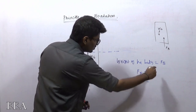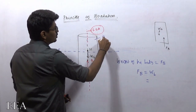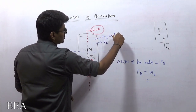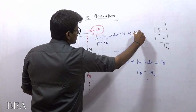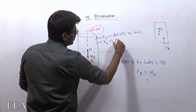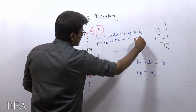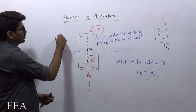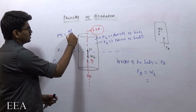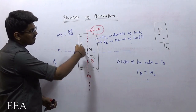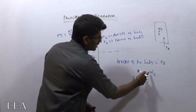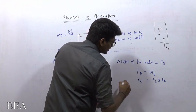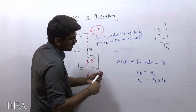And what is W_b — weight of the body? Let me take density of the body to be rho_b and volume of the body to be V_b. Rho_b is density of the solid body and V_b is volume of the solid body. We know that weight equals rho·g·volume, so weight of the body equals rho_b·g·V_b. Therefore, F_b should equal rho_b·g·V_b.